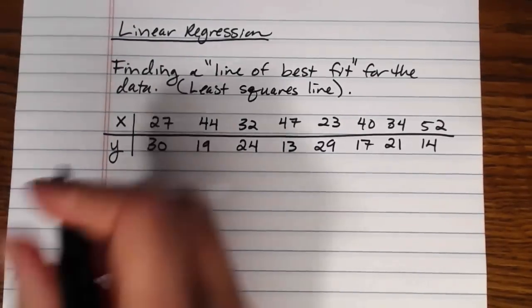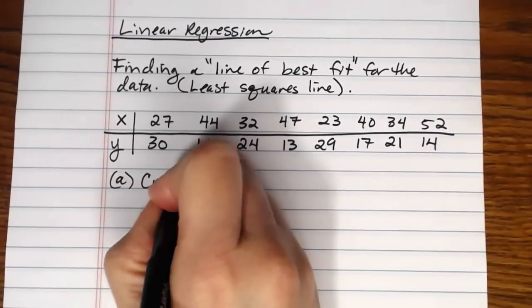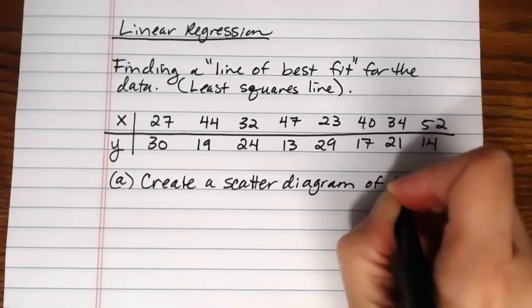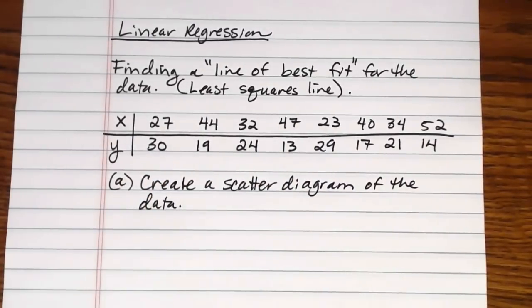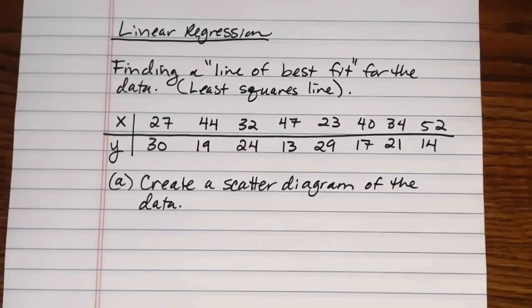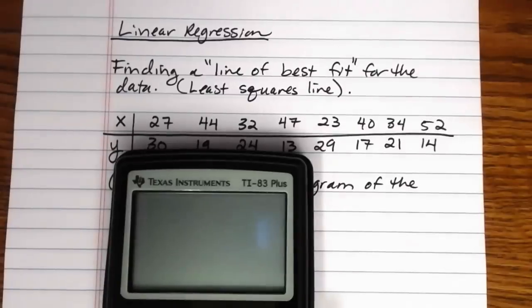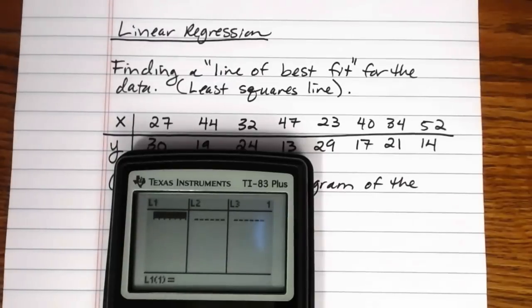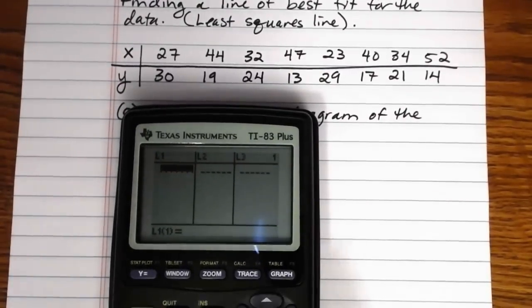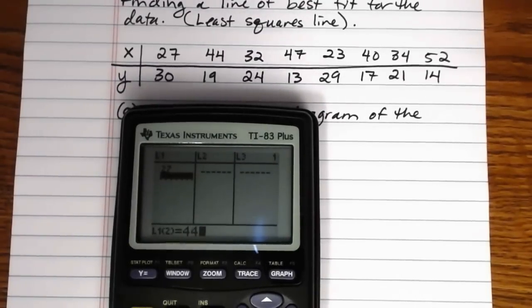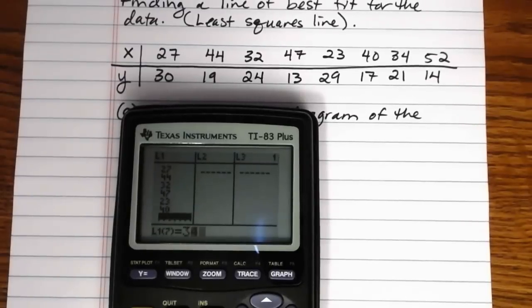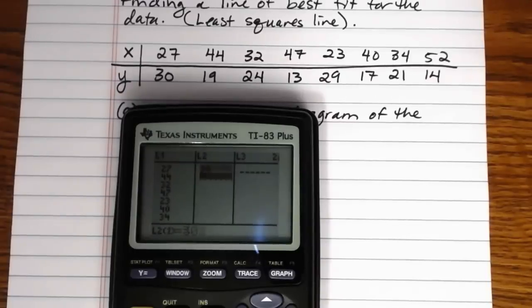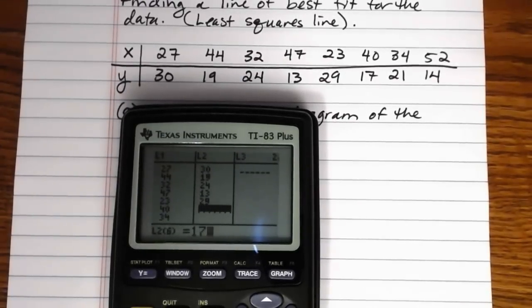And the first thing that we might want to do is we might want to actually create, let's do a part a where we create a scatter diagram of the data, because we might be interested in what does this data set actually look like, does it even look linear, does it make sense to try and fit a straight line to it. So here we will, got some old stuff in here let me clear it out, go into the calculator put the data into two lists. Again you want your x data in one list so I'm going to put it in list one. And then we want our y data in a second list.